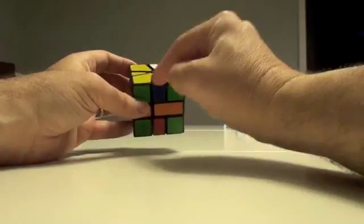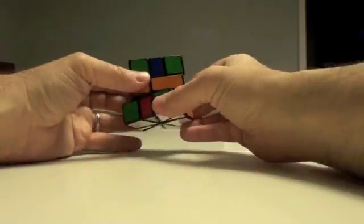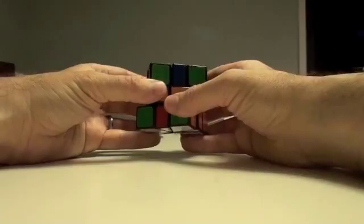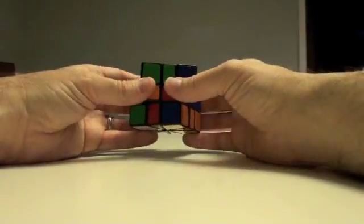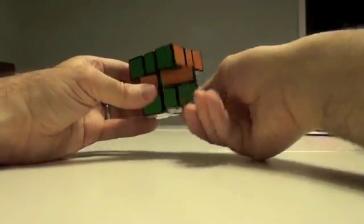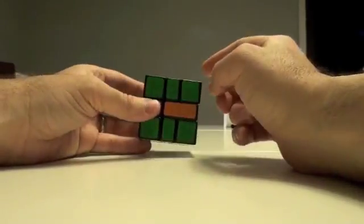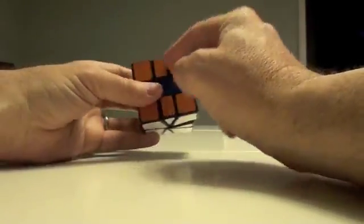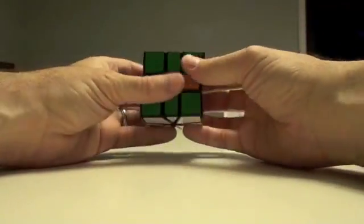And then the next part is we just do our corner up and down swapping. Prime the bottom, 2R, take the prime out of the bottom. Prime the top, 2R. And there you have it. So that's the algorithm that swaps these guys and these guys. And that's all you need to know.